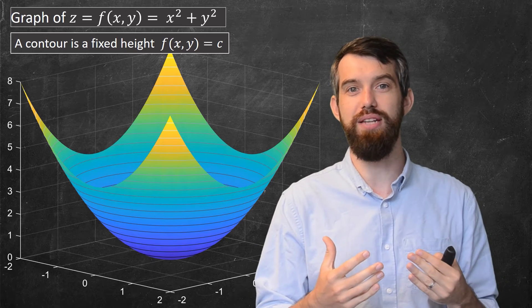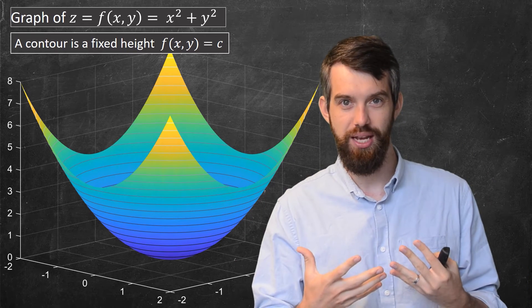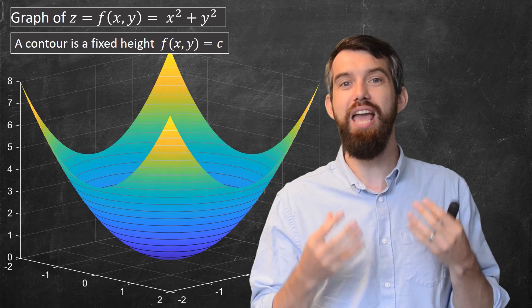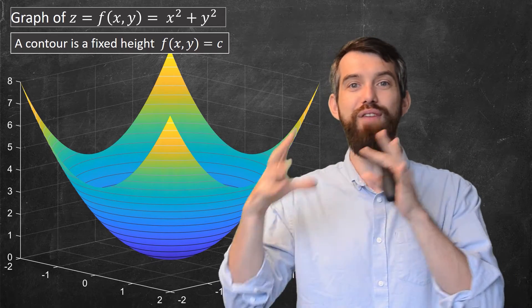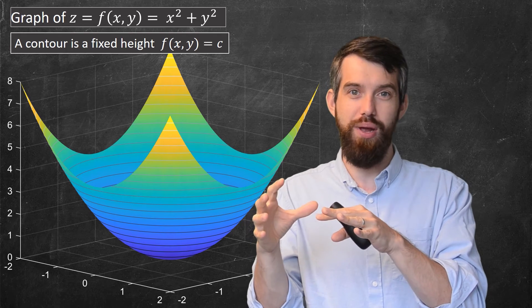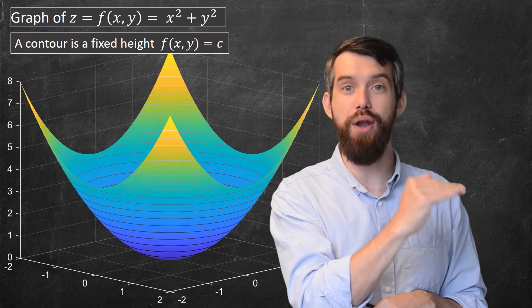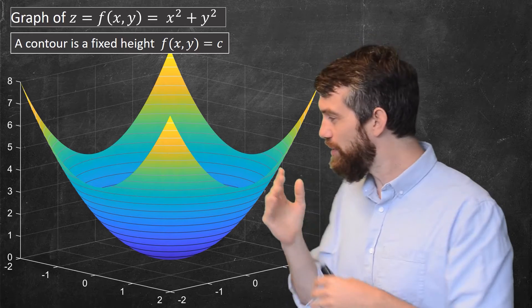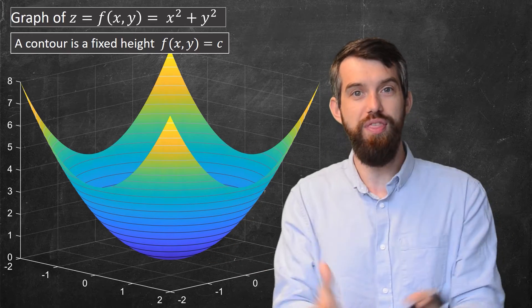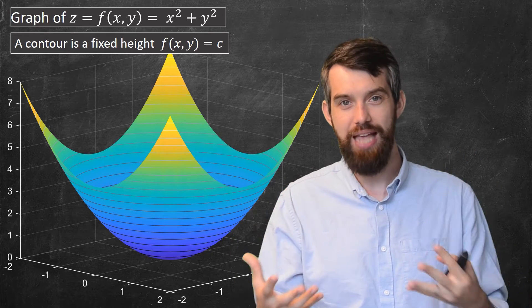What these circles represent are something called contours. What a contour is, is a fixed height of the function. It's the f of xy, all of the xy points, where it's equal to some fixed output value, like 1, or 2, or 3. That's what these circles represent on this particular x squared plus y squared equal to z.